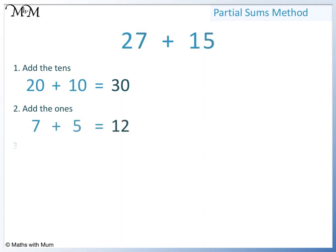Finally we find the total. 30 plus 12 equals 42. So 27 plus 15 equals 42.